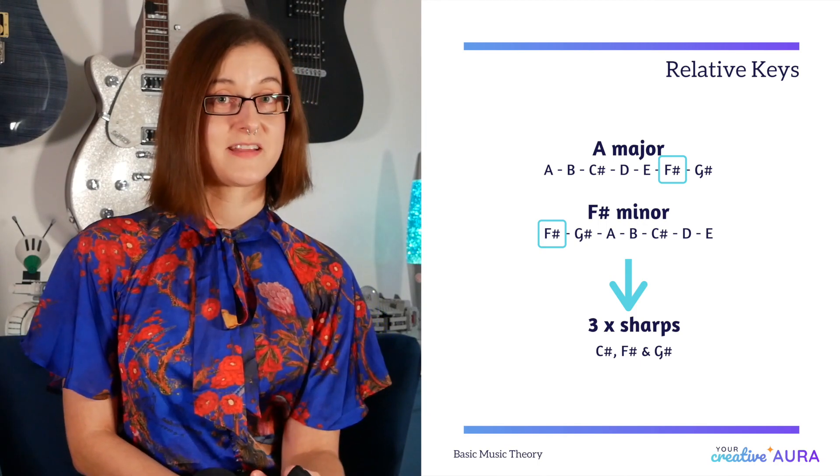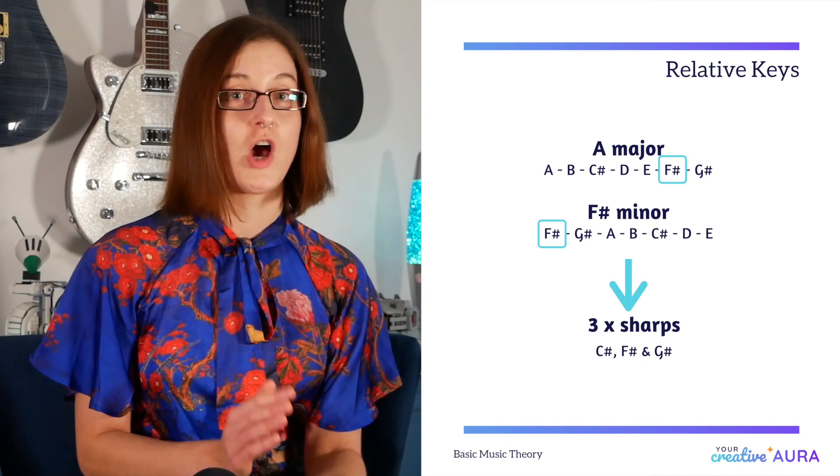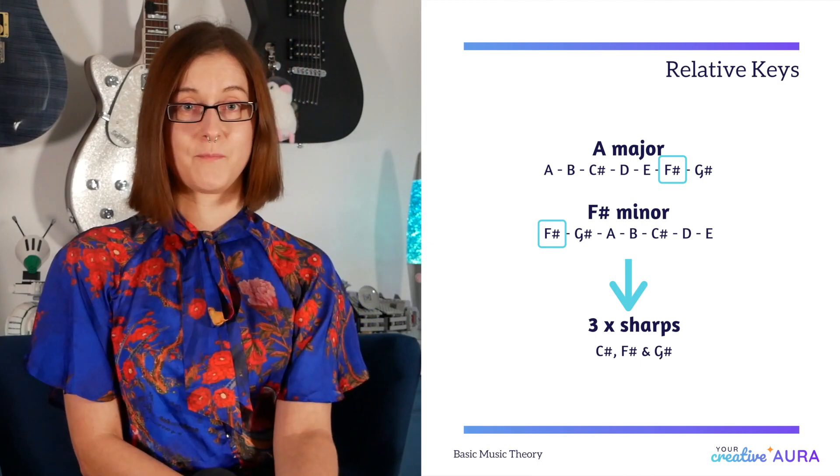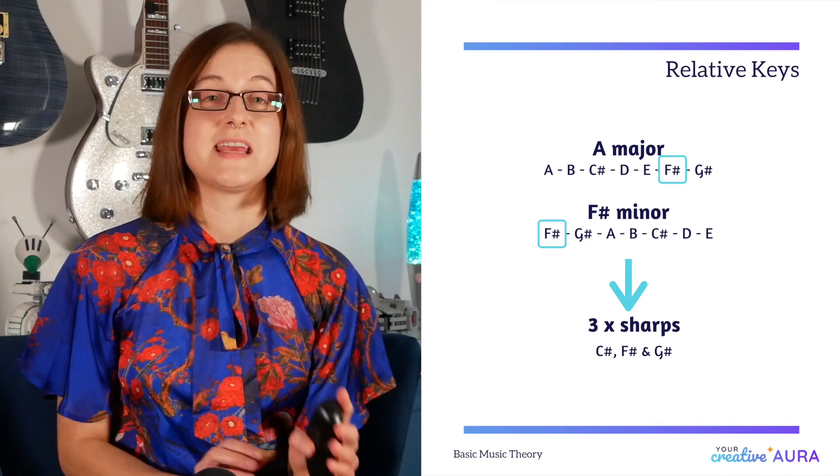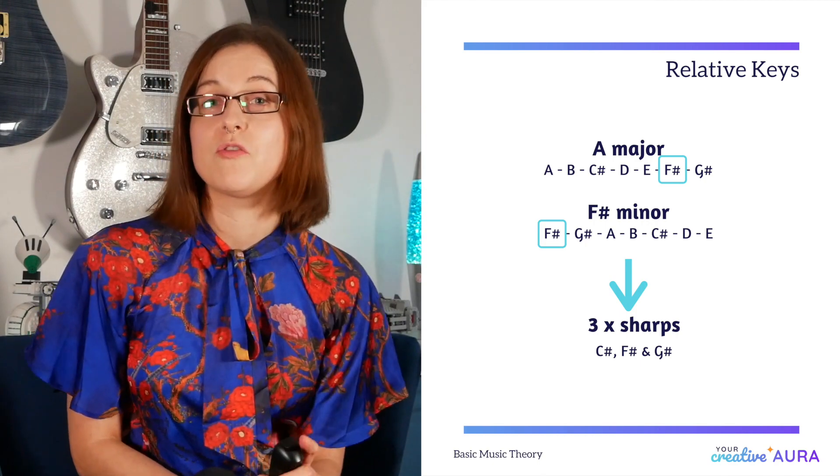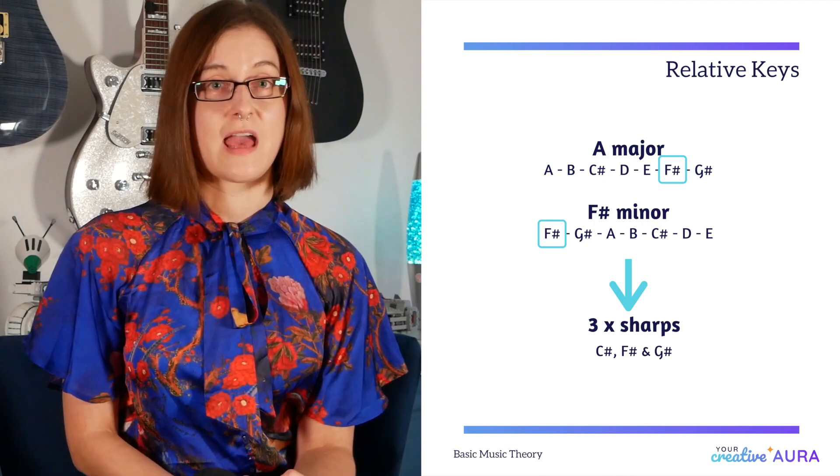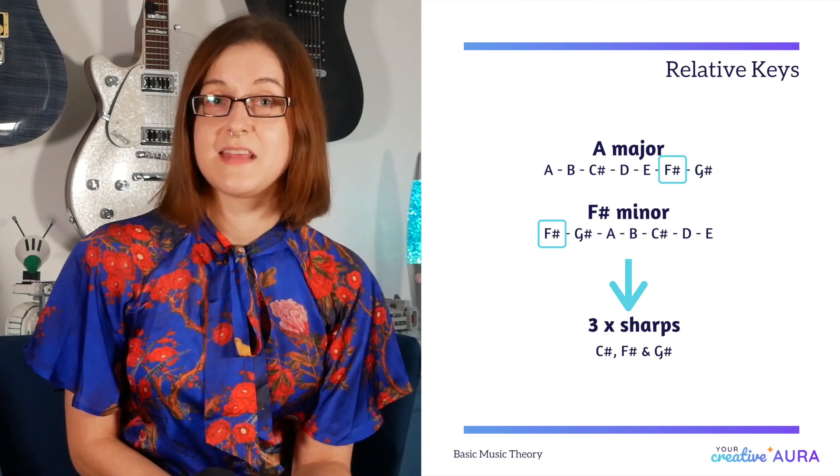However the minor scale starts at the sixth note instead: F sharp, G sharp, A, B, C sharp, D and then E. Their key signature is three sharps. The C, the F and the G, all three are sharp notes. So let's listen to the A major scale, followed by the F minor scale, which starts at the sixth degree.